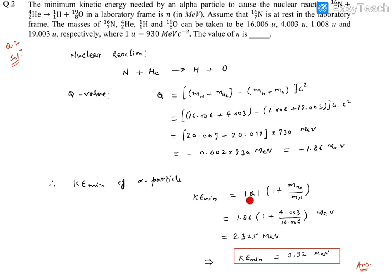So this delta Q mod within bracket 1 plus mass of alpha particle divided by mass of nitrogen. That means this is the nuclei which was stable, stationary, and this is alpha particle which was bombarding.